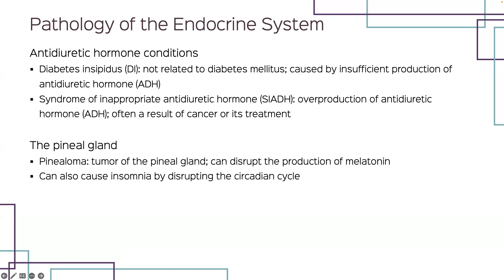For antidiuretic hormone conditions, diabetes insipidus involves insufficient production of ADH, causing too much urine to be produced. The syndrome of inappropriate antidiuretic hormone (SIADH) is an overproduction of ADH, typically the result of cancer or its treatments. Conditions of the pineal gland include pinealoma, which is a tumor, and it can also cause insomnia by disrupting the circadian cycle.